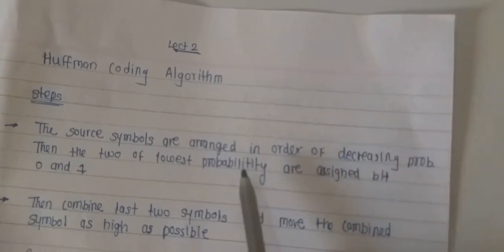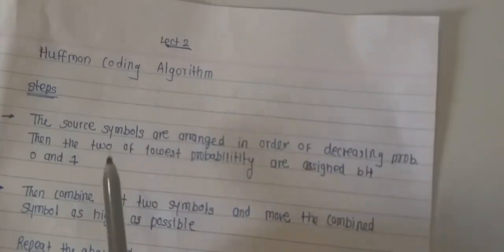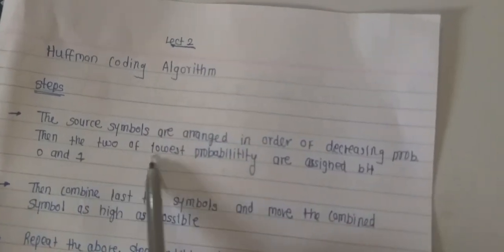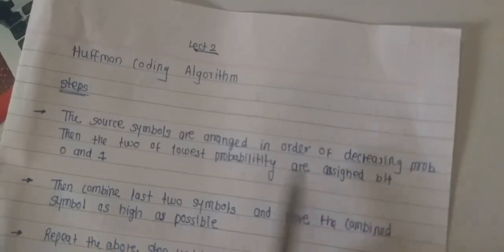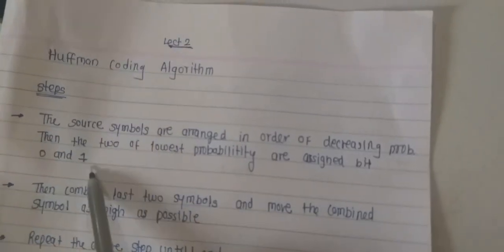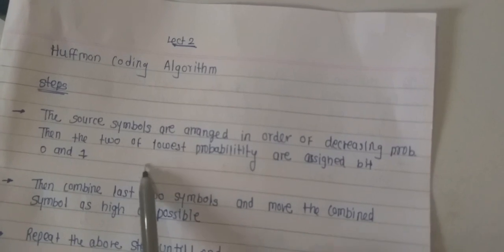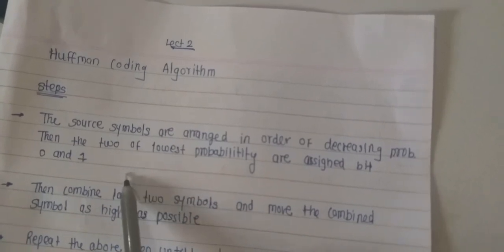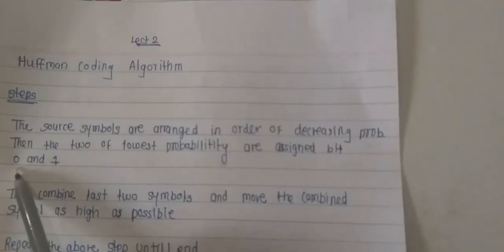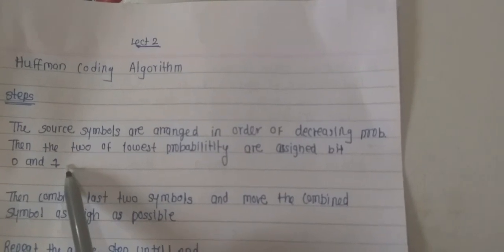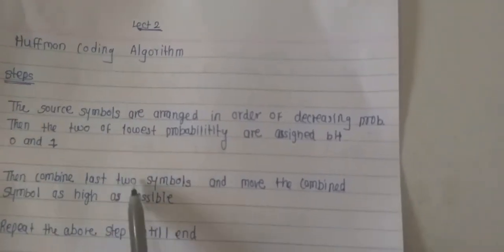The lowest probability is at the bottom. After that, we have to combine the least two probabilities and assign the bits as 0 and 1. That means the last two probabilities we add, and 0 is assigned to the first probability and 1 is assigned to the second probability.